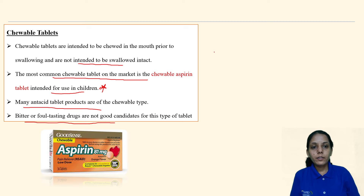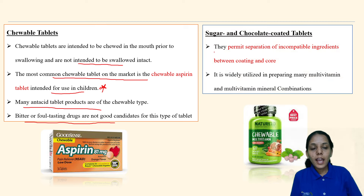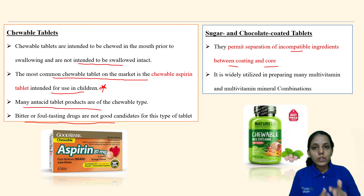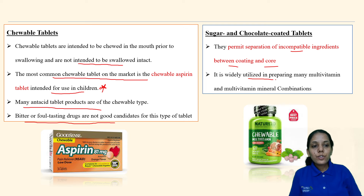Sugar and chocolate coated tablets permit separation of incompatible ingredients between the coating and the core. Whatever incompatible ingredients are present, one can be put in the coating and the other in the core. These are widely used in preparing many multivitamin and multivitamin-mineral combinations, such as chewable multivitamin tablets.